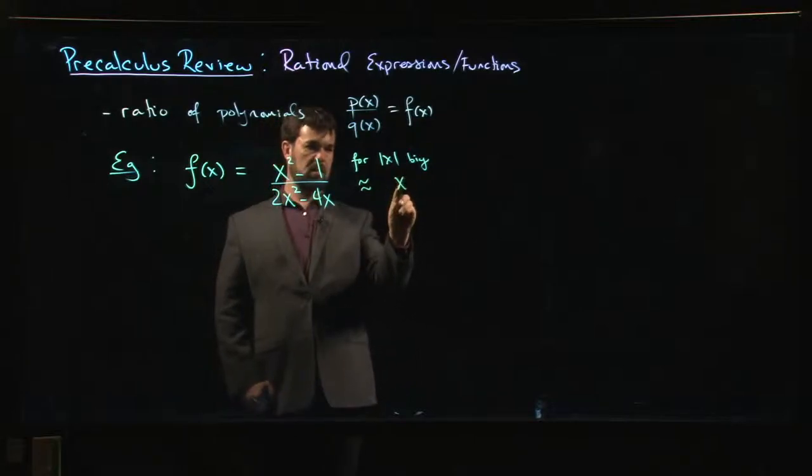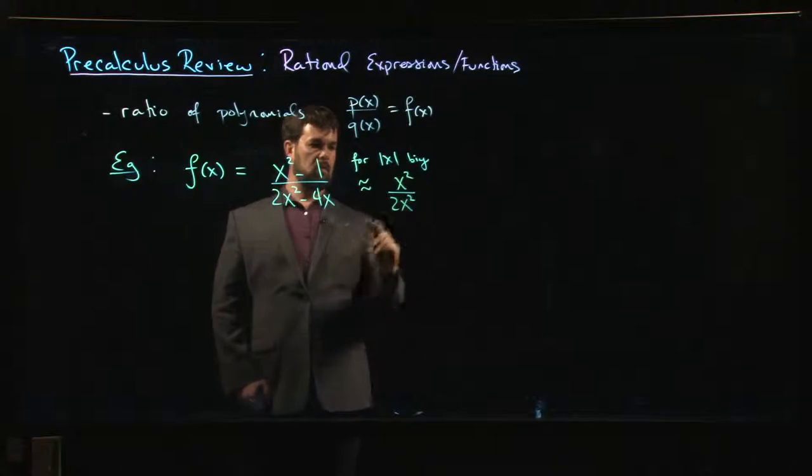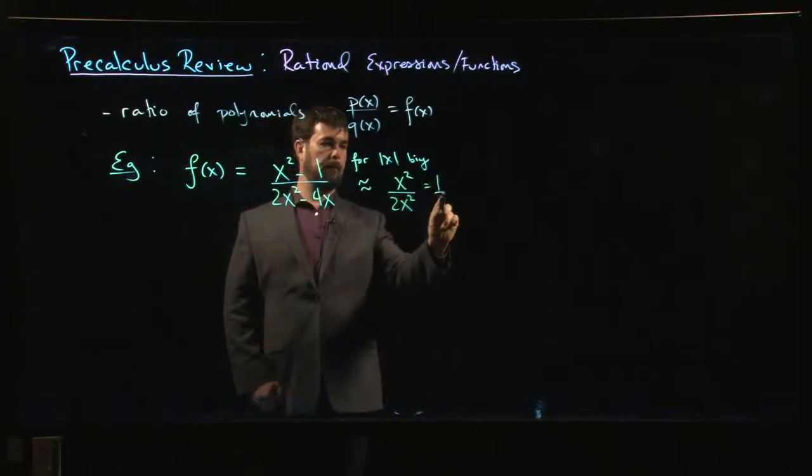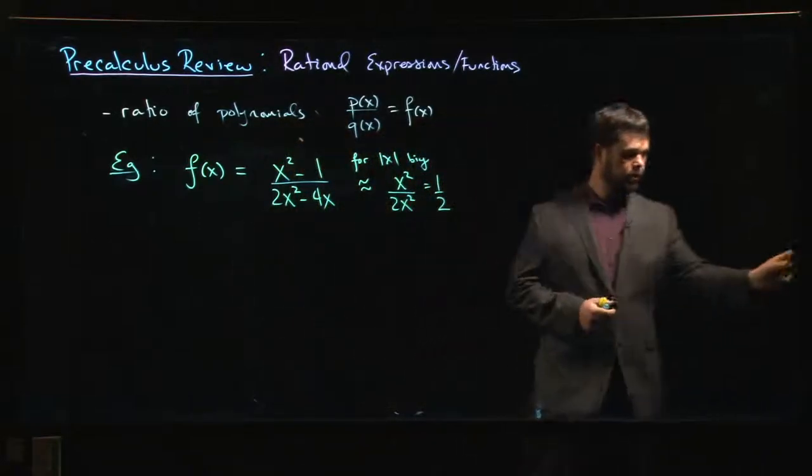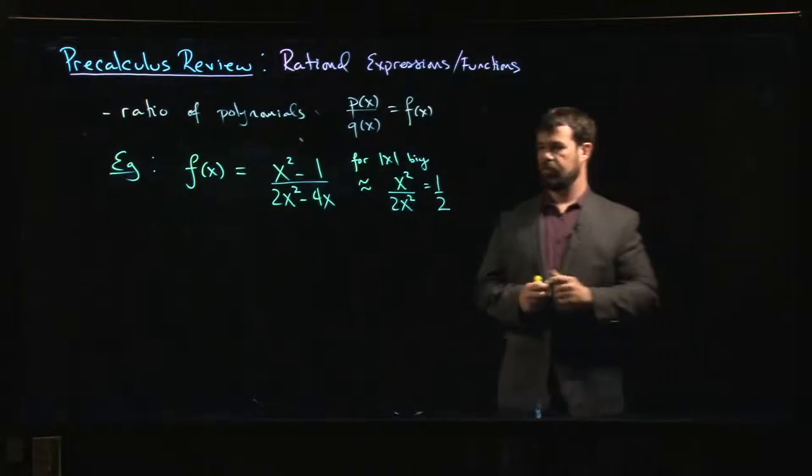So that value there, that one-half, this is a horizontal asymptote. Okay, so y equals 1/2, that's a horizontal asymptote.